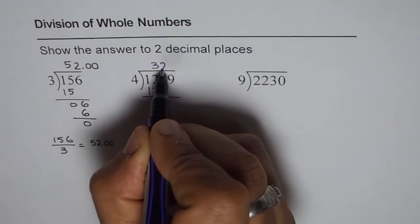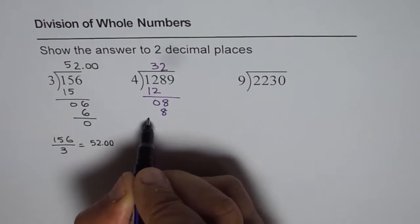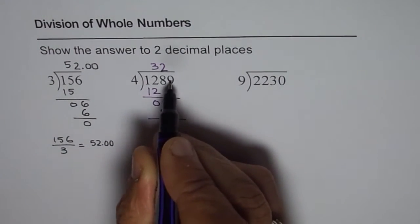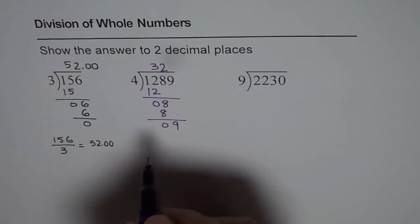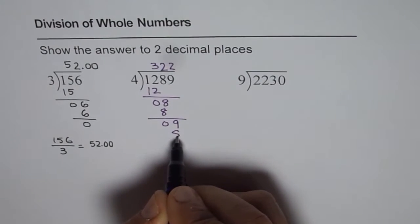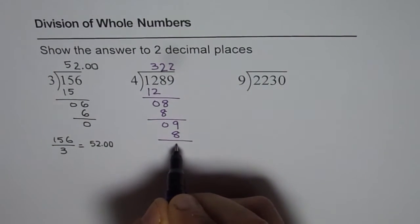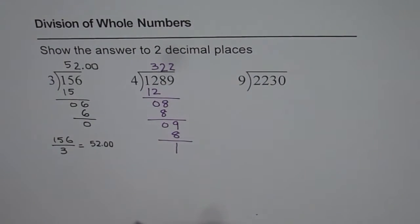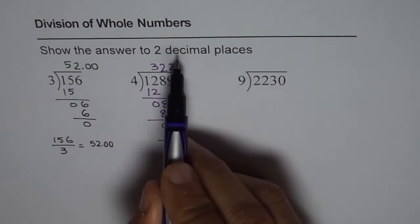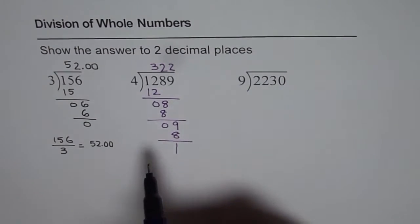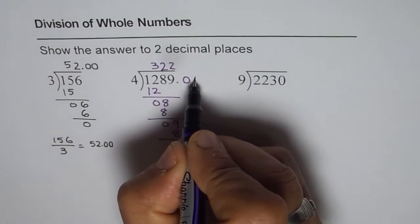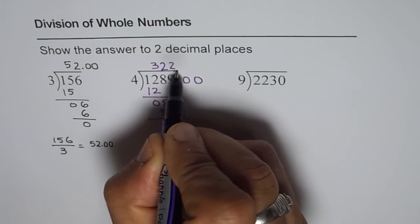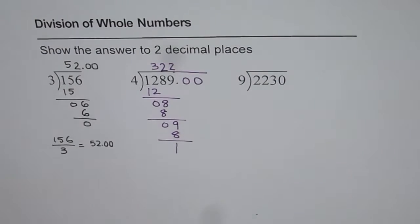Bring down the next number which is 9. 4 times 2 is 8, and when you take away 8 from 9 you get 1. Now you know that you have to write answers to two decimal places. So it is a good practice to introduce two zeros right in the very beginning, so that you don't make that mistake.